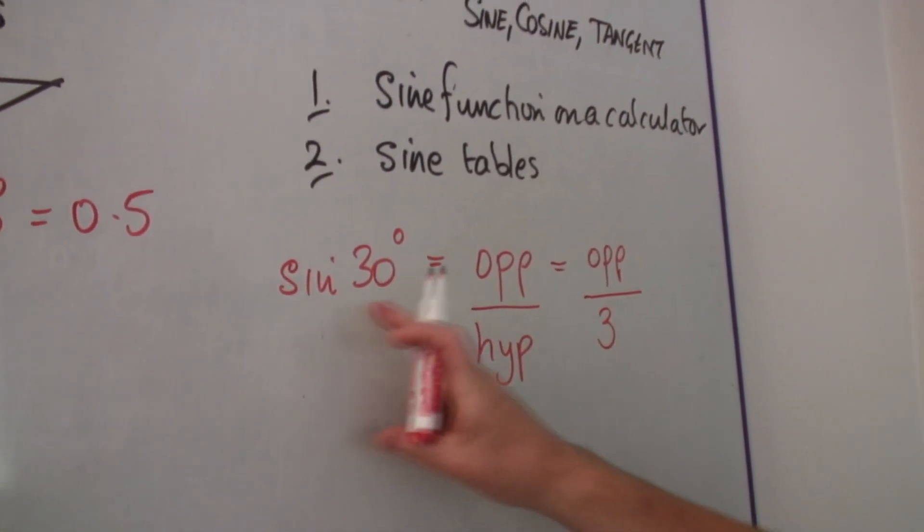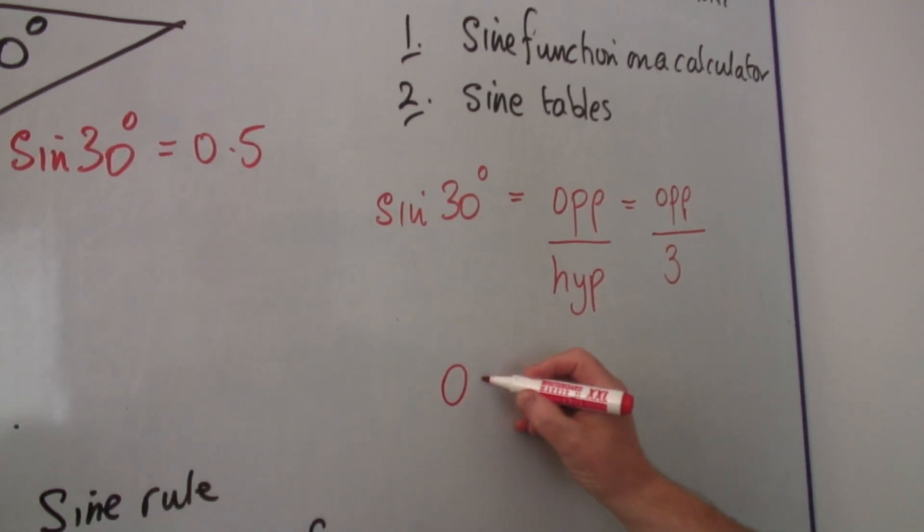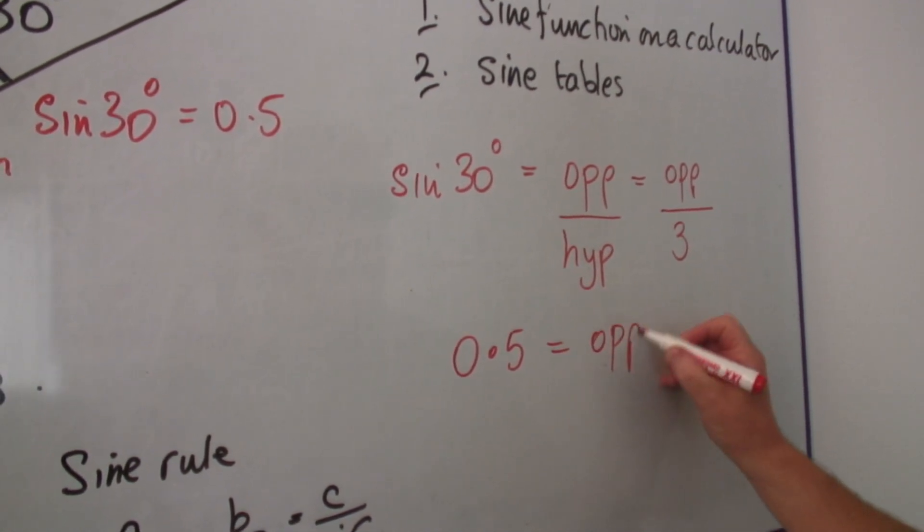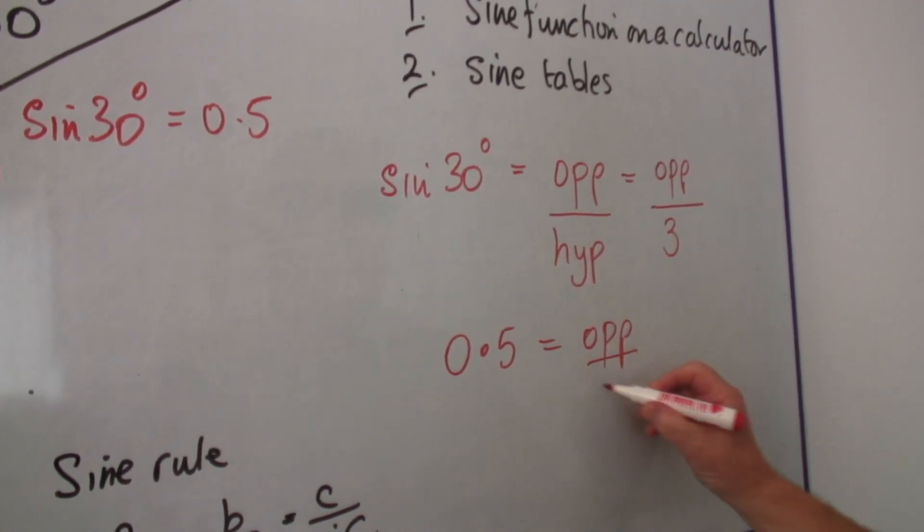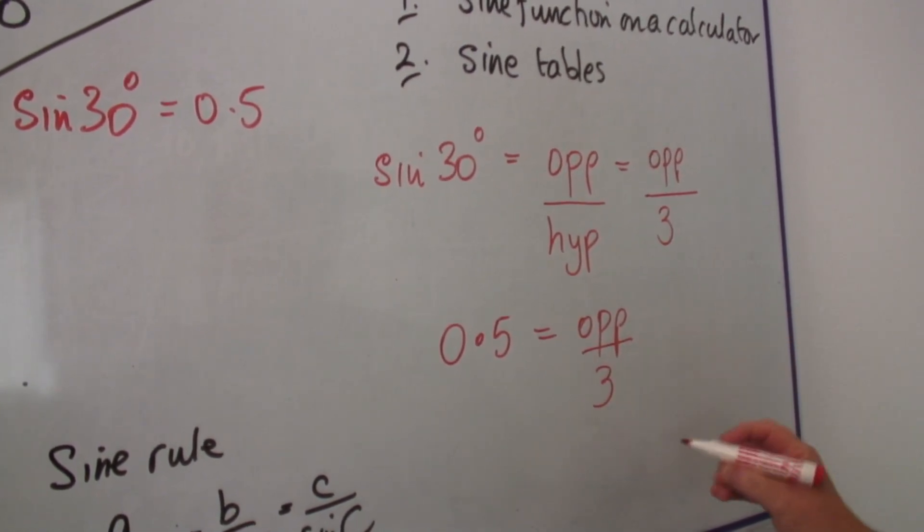But we know that sine of 30 is 0.5, so we end up with an equation: 0.5 is equal to the side opposite divided by 3. And if we multiply both sides by 3,